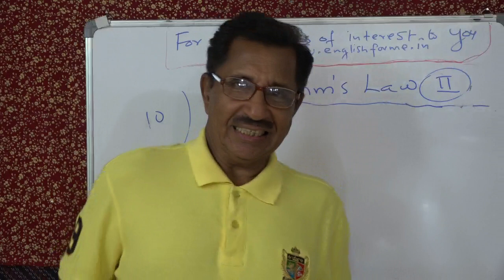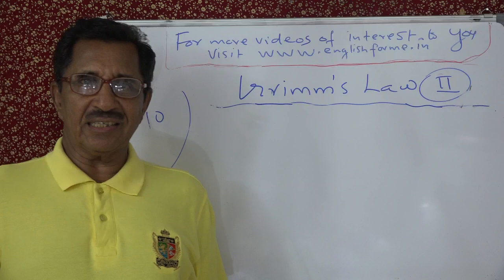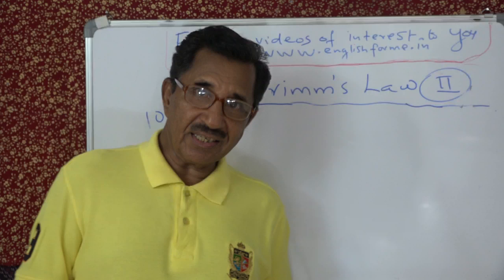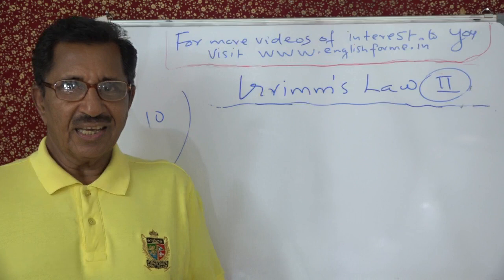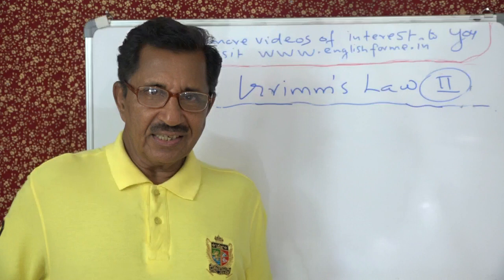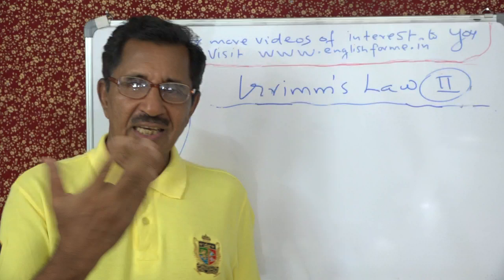Hello friends. In the last class we saw what Grimm's Law is, who Grimm was, and who was his predecessor — that is Rask, the Danish philologist who first pointed out these changes. Jacob Grimm's contribution is that he saw some regularity, arranged it, and made some statements about it.